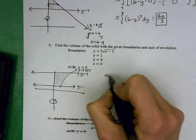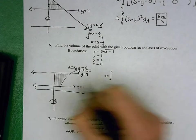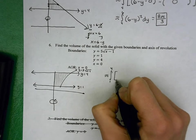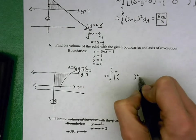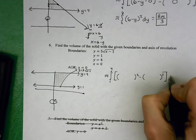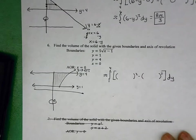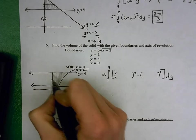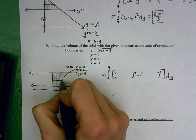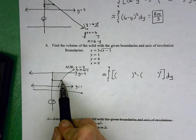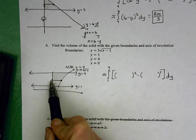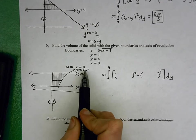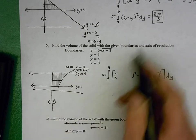So we're doing pi. Lower y is 1, upper y is 4. Big R squared minus little r squared dy, in terms of y. My big R is the distance from the axis of revolution to the furthest point of the shaded region. We do upper minus lower, or right minus left. My right here is this graph, y equals 5 root x minus 1. But I need that to be in terms of y.